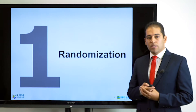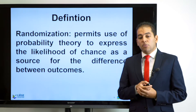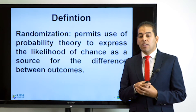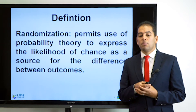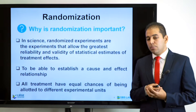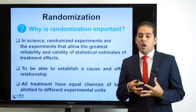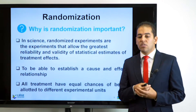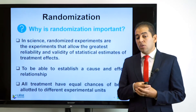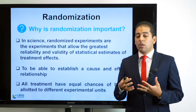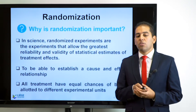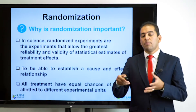Let's start with randomization. According to the definition, randomization permits use of probability theory to express the likelihood of chance as a source for the differences between outcomes. Randomized experiments allow the greatest reliability and validity of statistical estimates of treatment effects. This allows us to establish a cause-and-effect relationship with high confidence, and ensures all treatments have equal chance of being allotted to different experimental units.